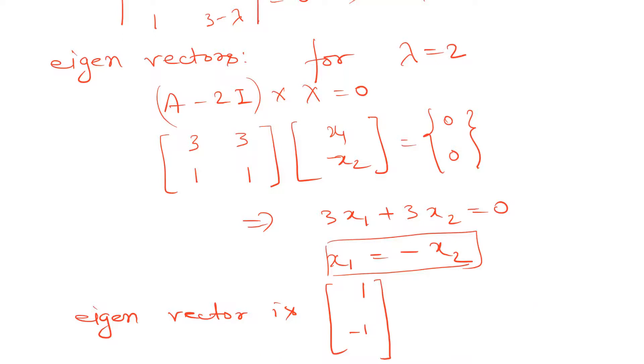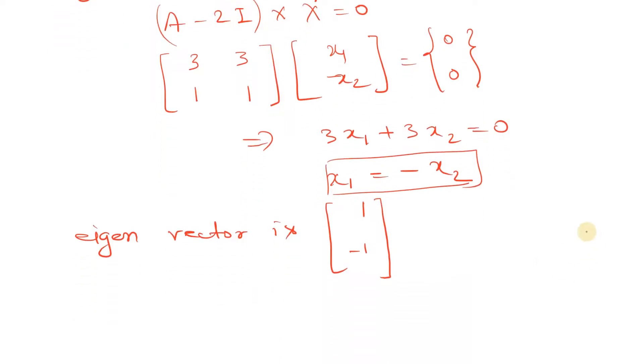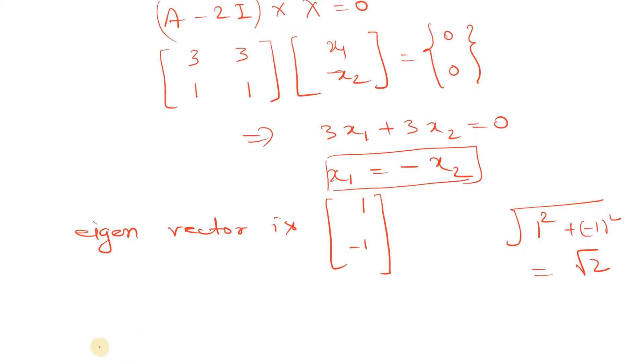And we need to find the normalized eigenvector. First, what we'll do is find the modulus of this. So this is 1 square plus negative 1 square, which is root 2. So we'll divide this eigenvector by root 2 and we'll get the normalized eigenvector.